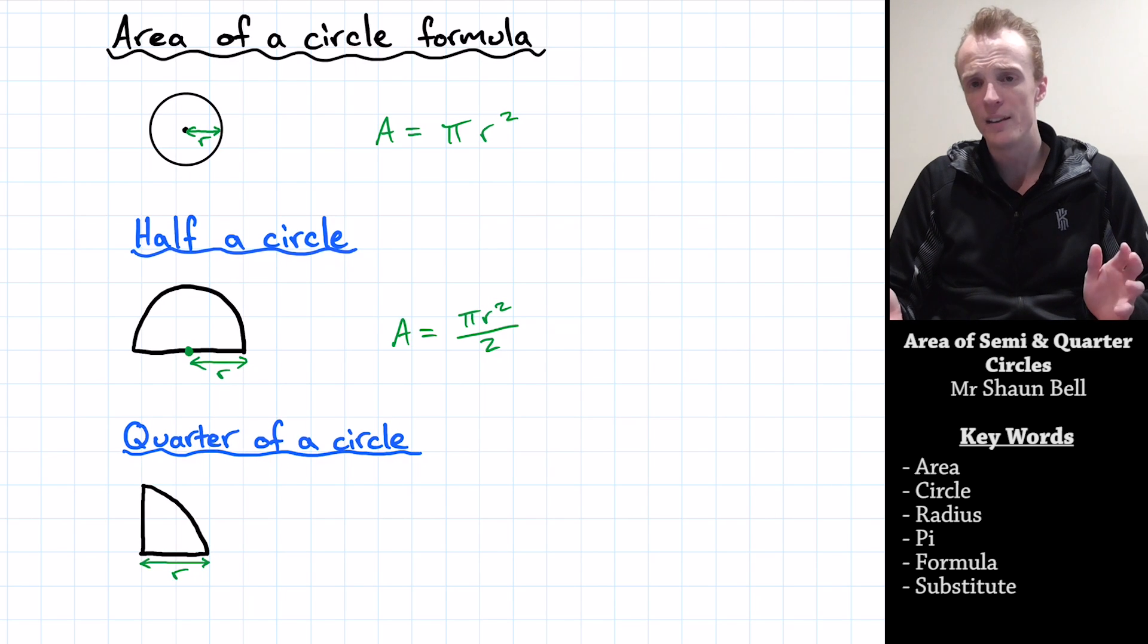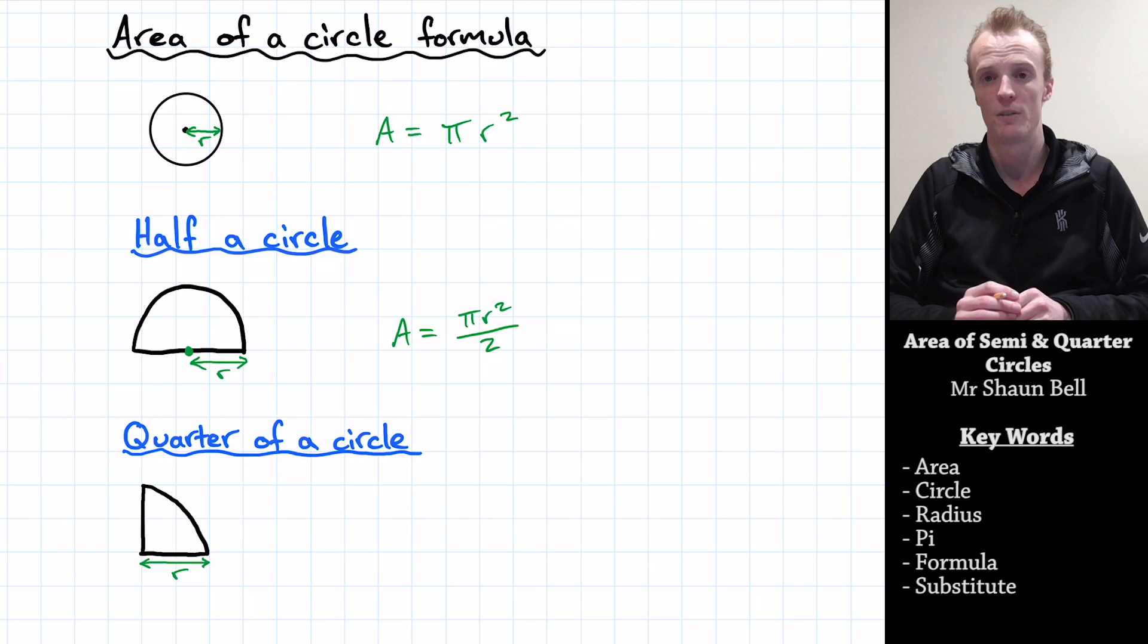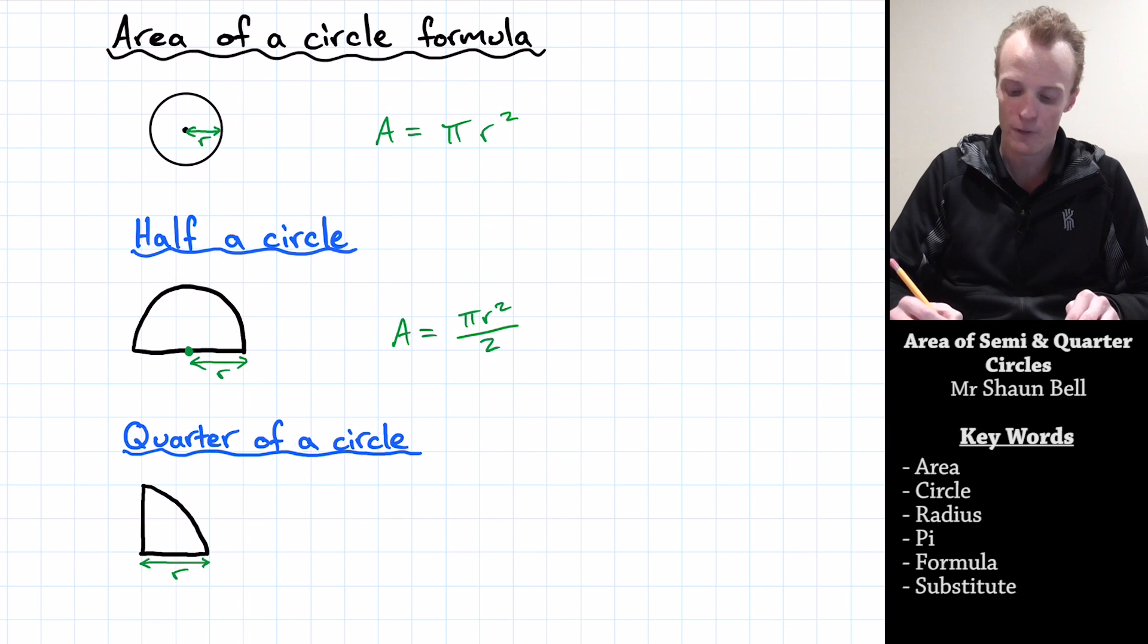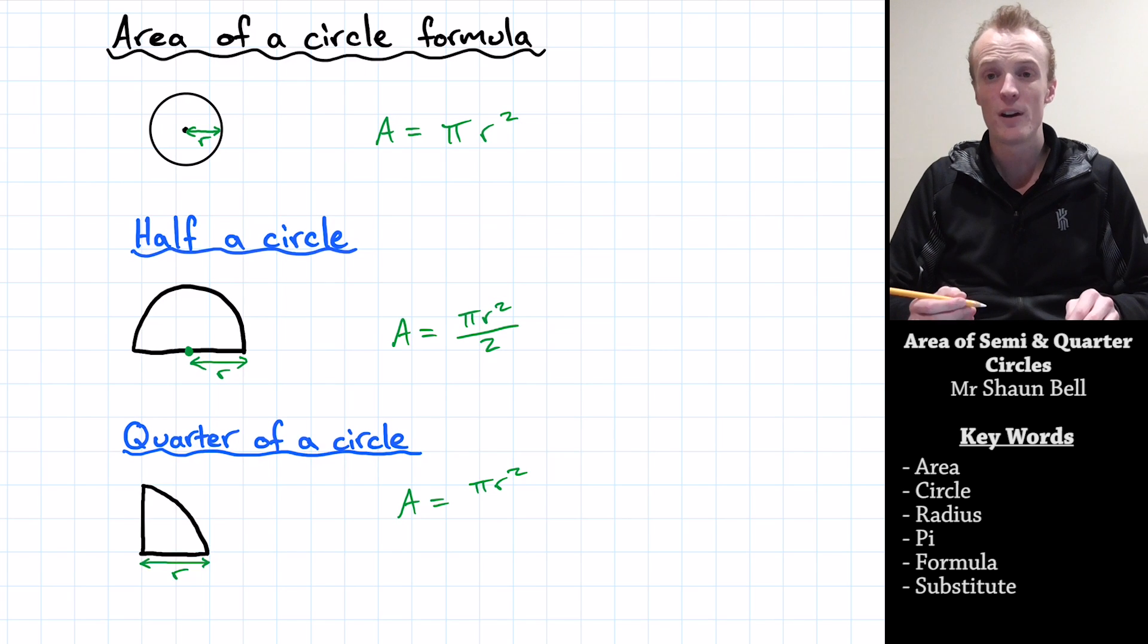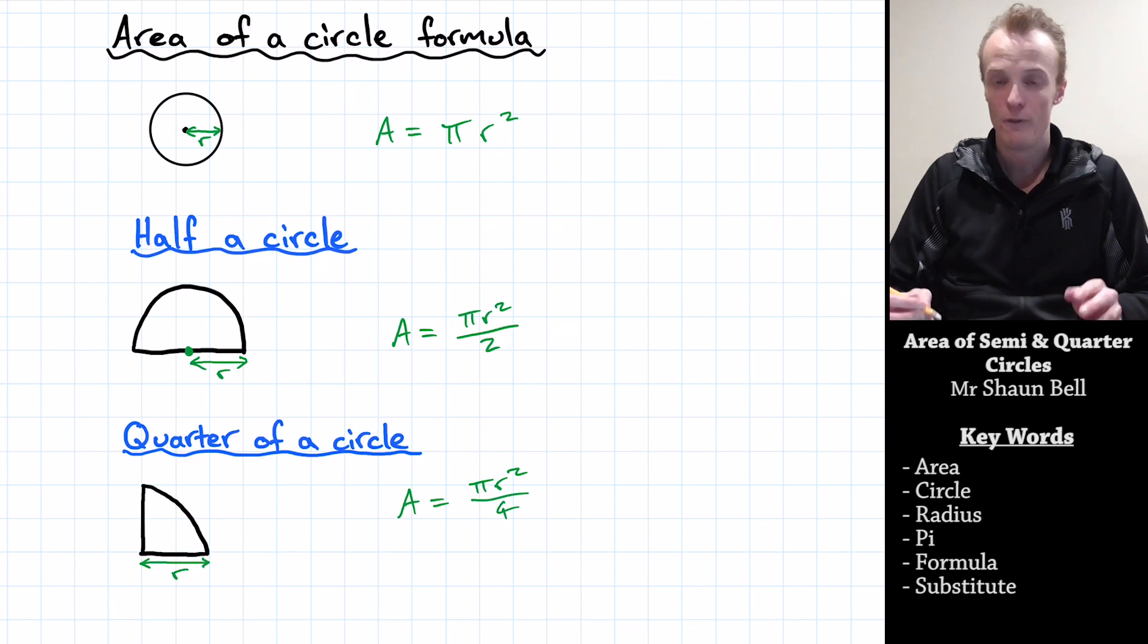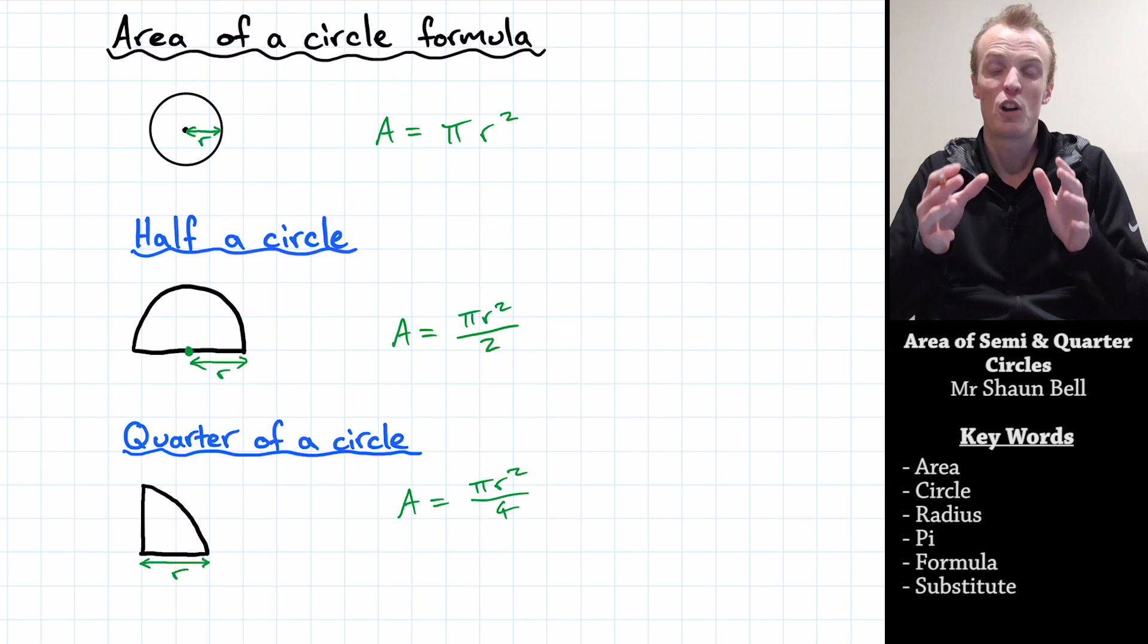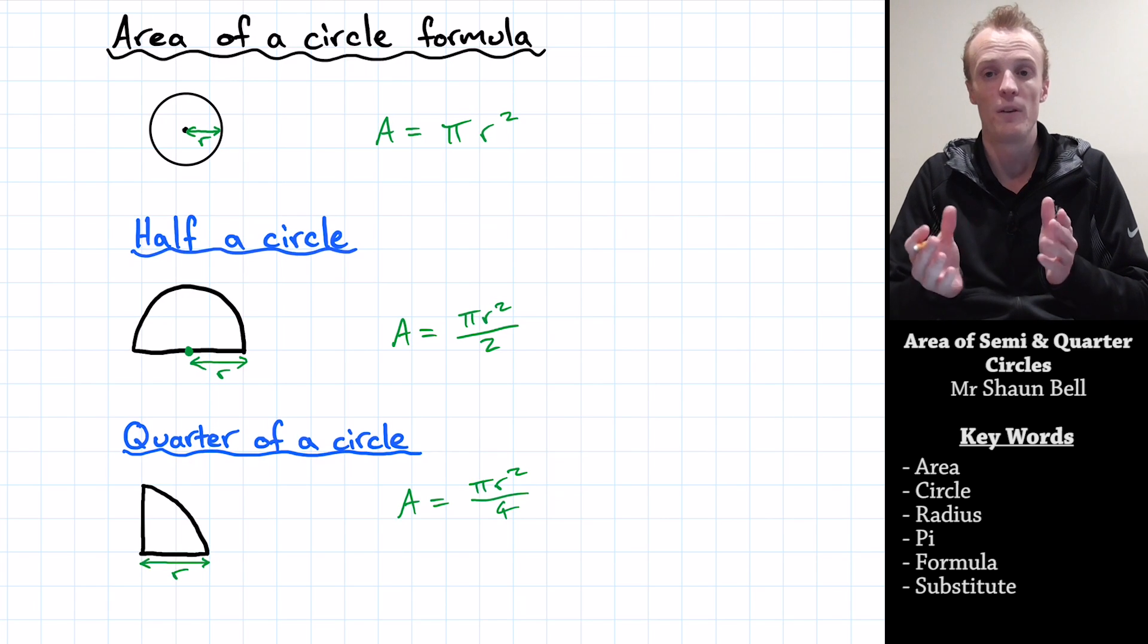And similar applies if we're going to look for the area of a quarter of a circle. We start with finding the area of a full circle, which is pi r squared, but rather than dividing by two, we divide by four because there's going to be a quarter of the circle that we're finding.